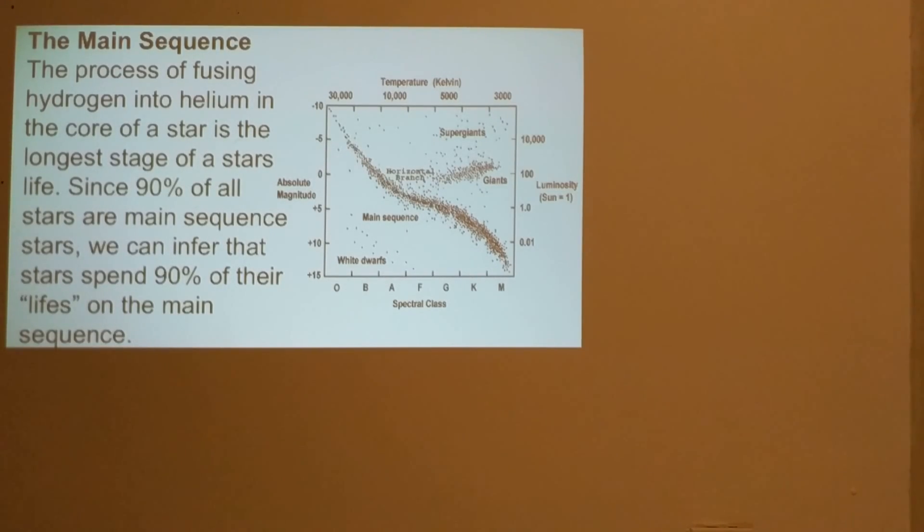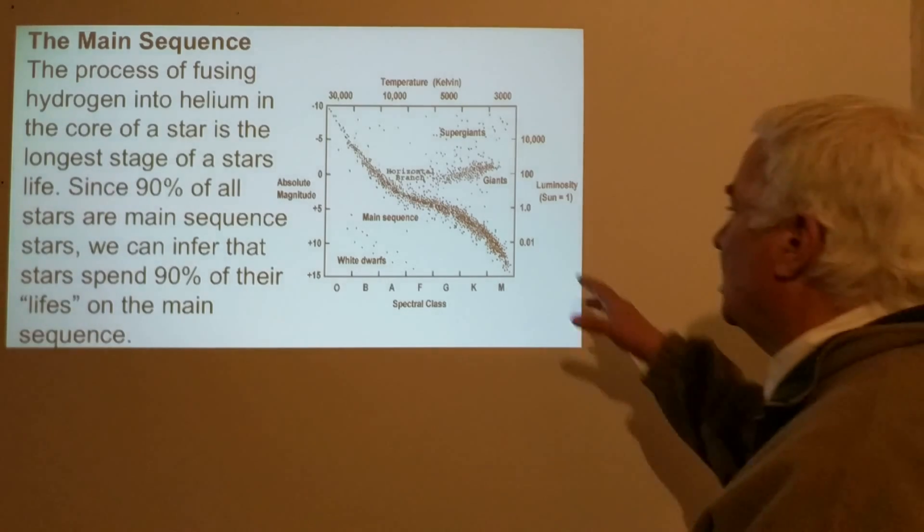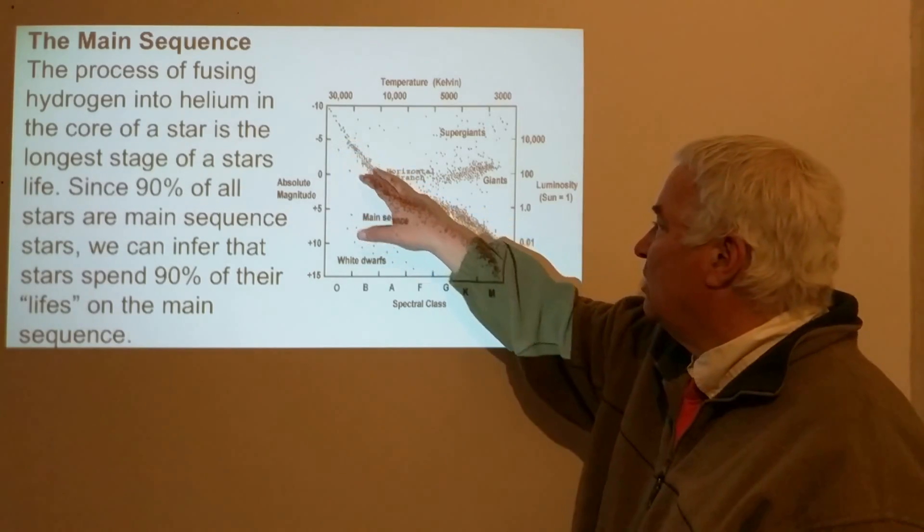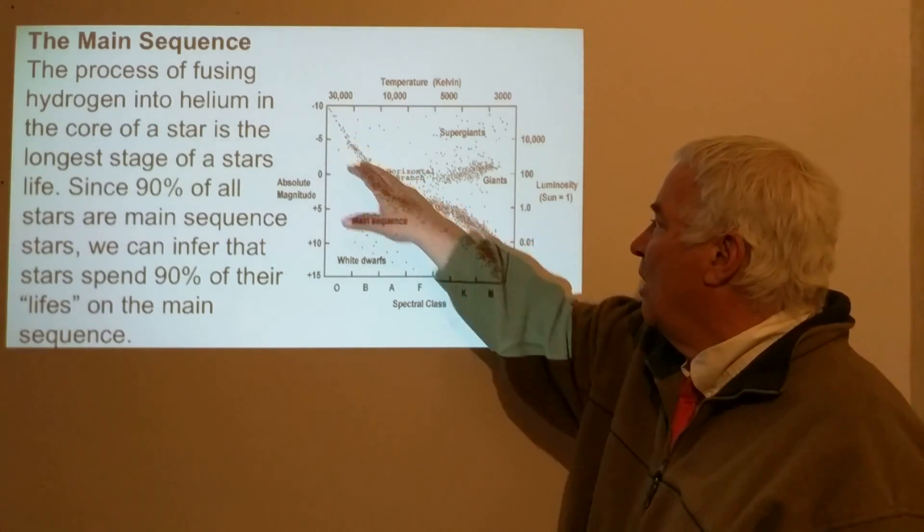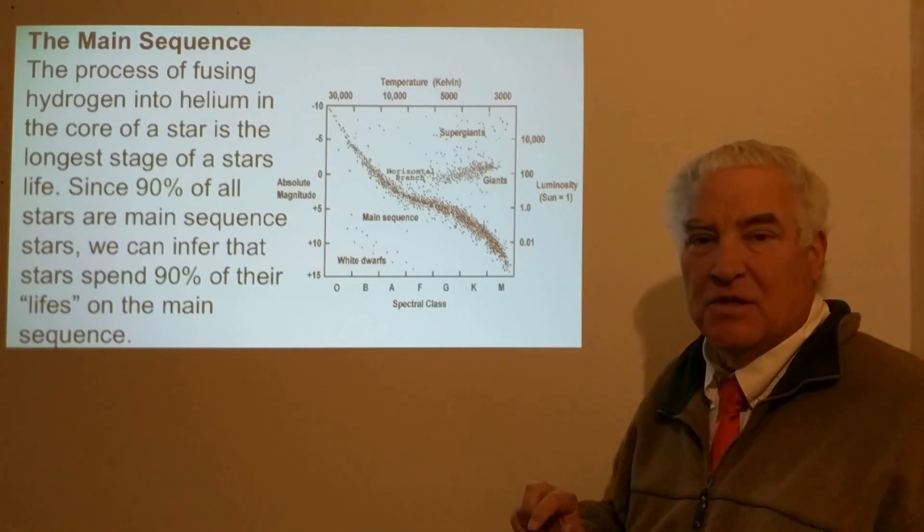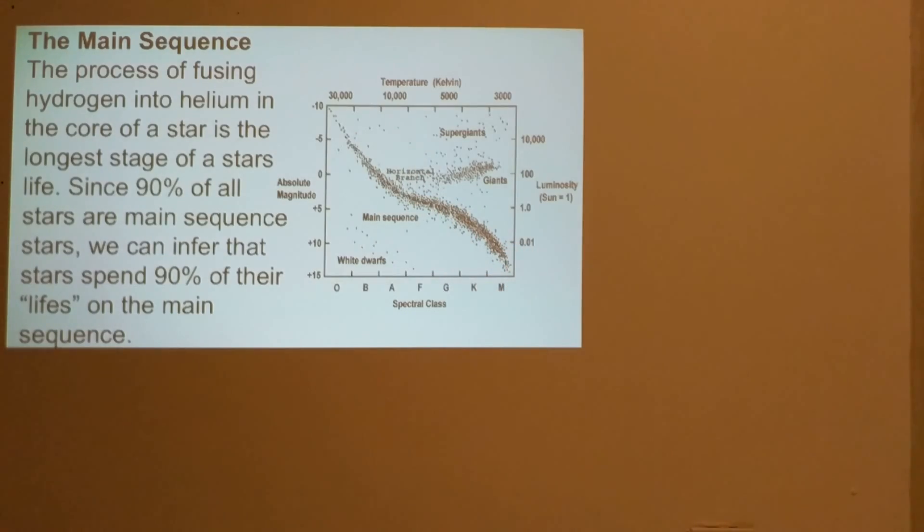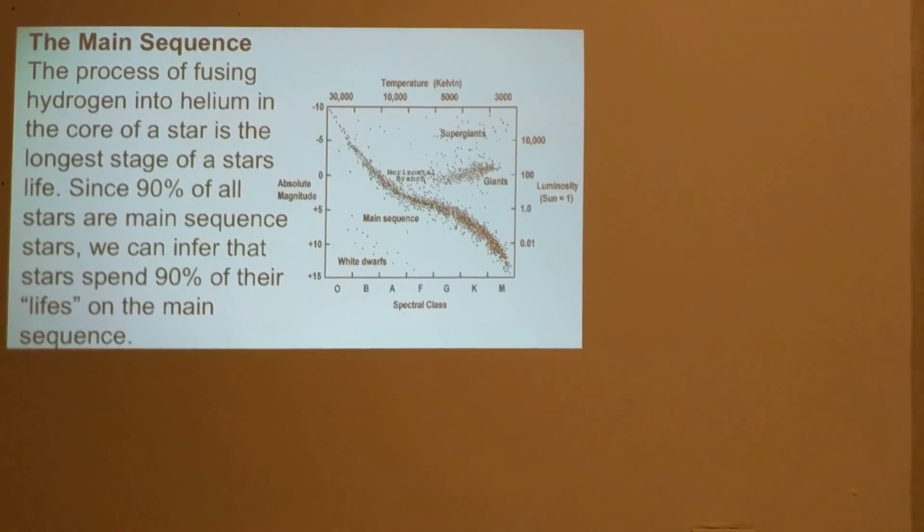The process of this fusion of hydrogen into helium in the core of the star is the longest stage of a star's life. And because of this, 90 percent of the stars that we see are on the main sequence. It's precisely because stars spend so much time converting hydrogen into helium that we see 90 percent of stars on the main sequence.